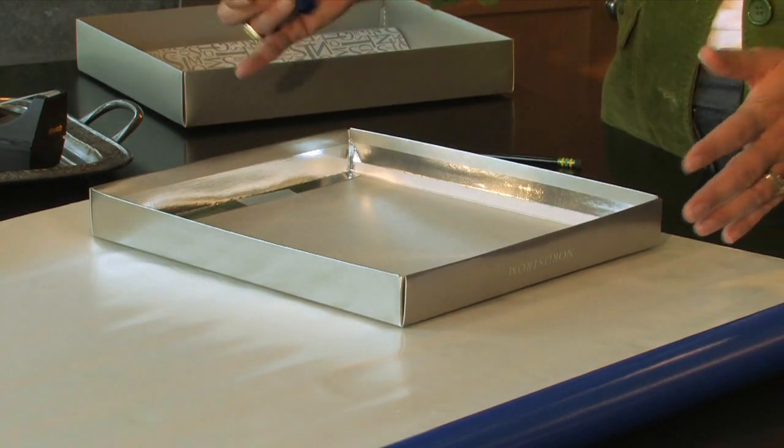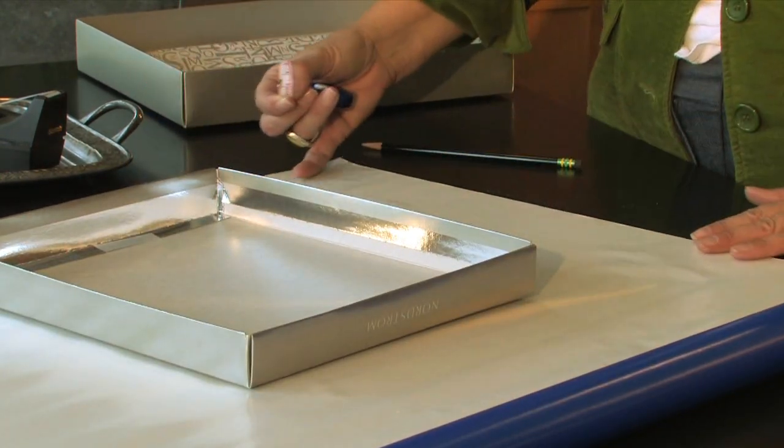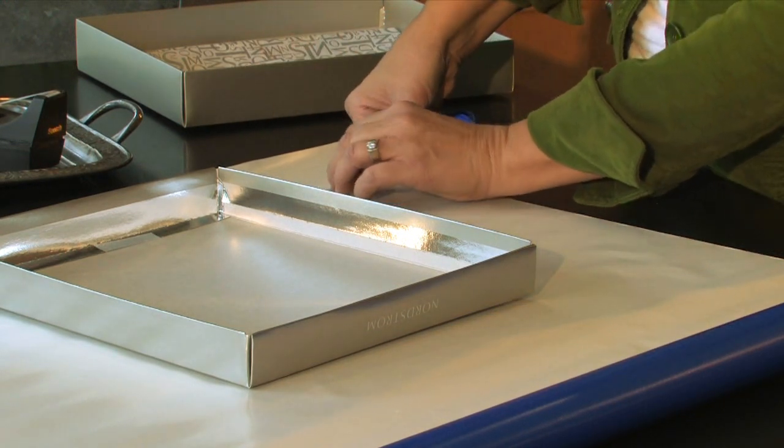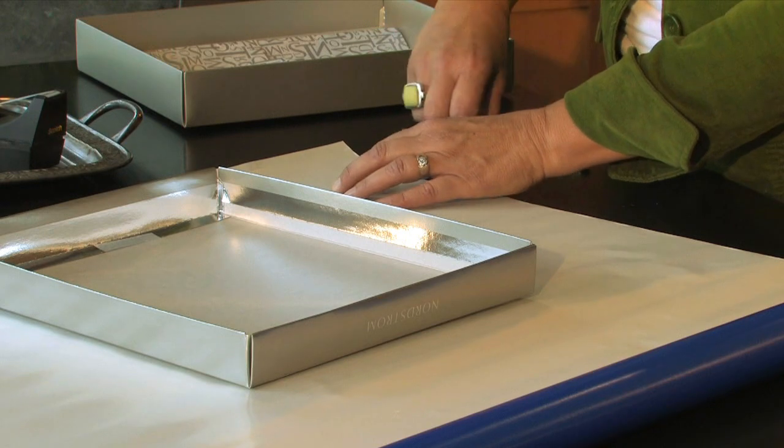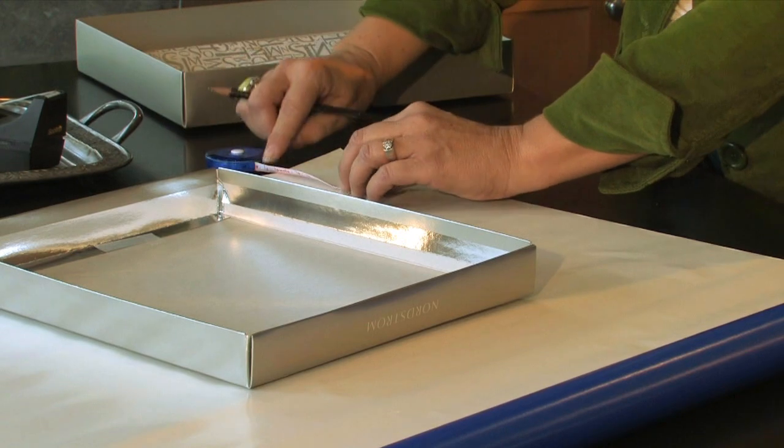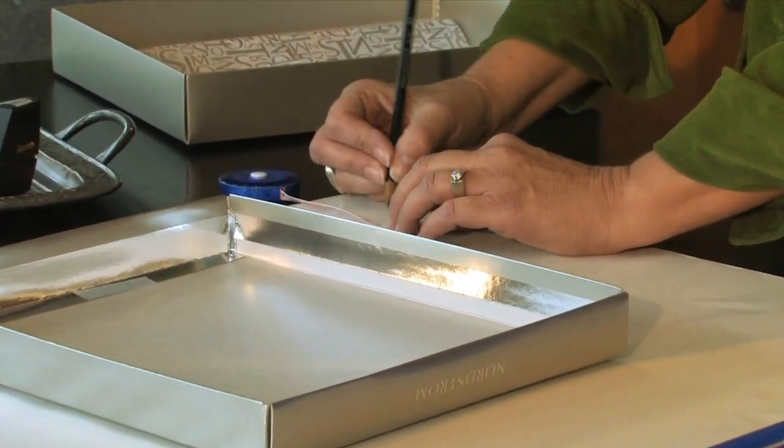So before I cut my paper, I'm going to take a look at my paper and I have two really good sides right here. So I'm going to measure two and a half inches and I'm just going to place a little mark. And I'm going to do that from both of my good edges of the paper.